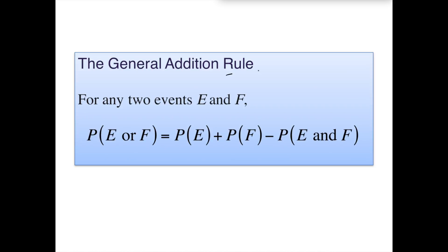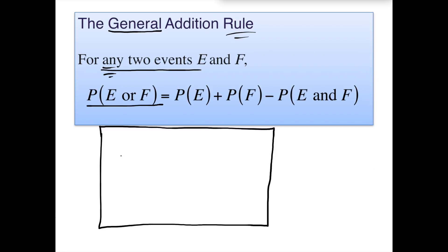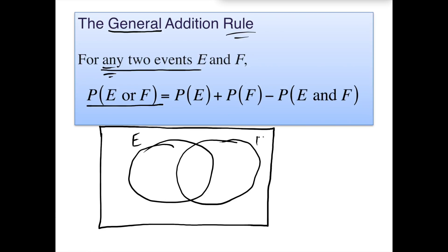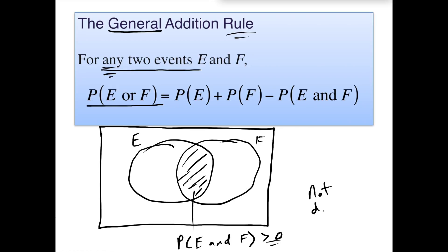Here's another rule — the general addition rule — which applies to any two events, not just mutually exclusive ones. If these events aren't mutually exclusive, we draw them with some overlap in the Venn diagram. That overlap represents the probability of both of them happening, so it's something greater than zero. These events are not disjoint — they could both happen at the same time.